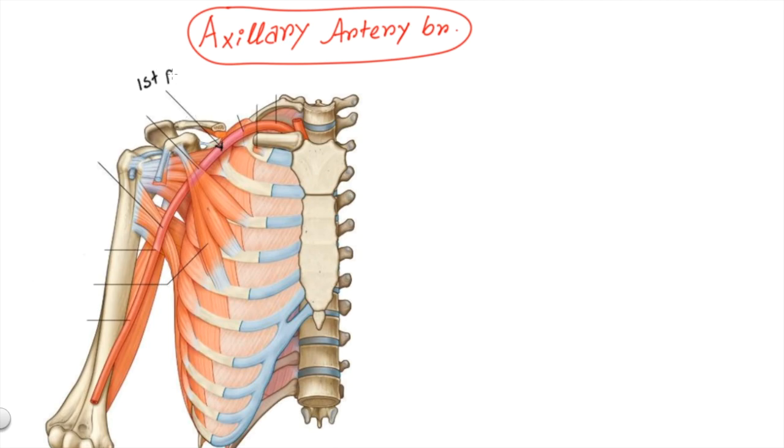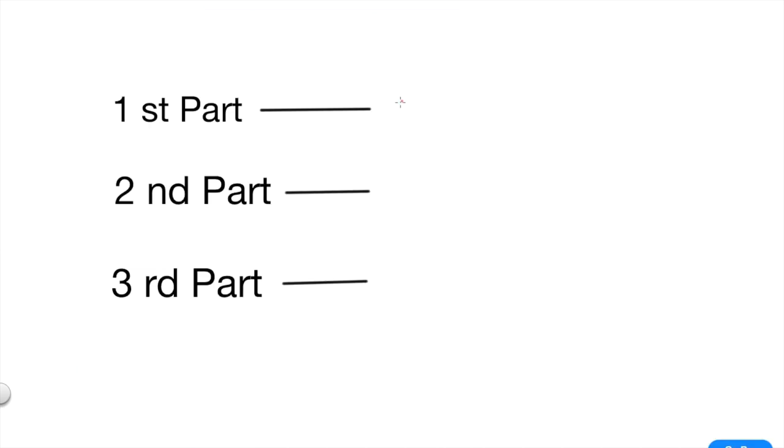We can divide the axillary artery into three parts: first part, second part, and third part. First part has one main branch, second part has two, and third part has three main branches. So it's pretty simple: one for one, two for two, and three for three.